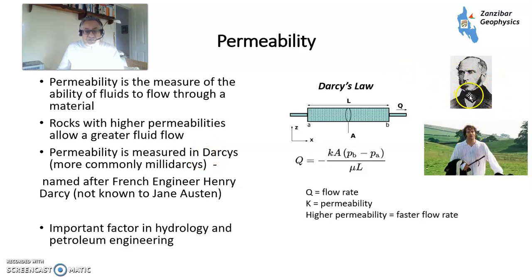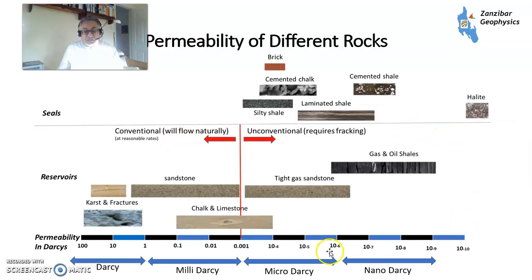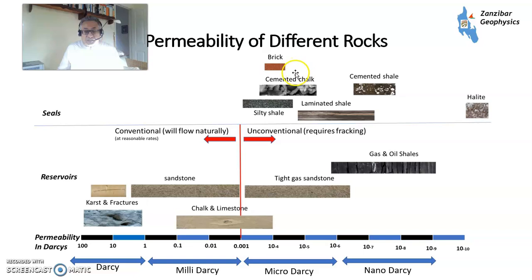Permeability, done by Henri Darcy — it's the ability of fluids to flow through a material. There's a video on permeability and Darcy's law on my channel. Permeability is measured in Darcys, mostly millidarcys to be honest. This diagram shows different permeabilities of different rocks. Karst and fractures can flow very fast — in the Darcy to multi-Darcy scenario, so drilling into karst is a real problem. Sandstones tend to be a few Darcys at best to a few millidarcys at worst. Then you have tight gas at less than one millidarcy, then shales, then potential seal rocks such as cemented chalk, silty shale, cemented shales, and halite rock salt at the best seal.